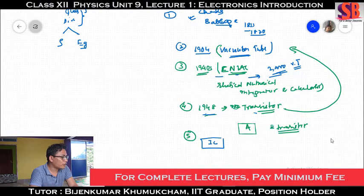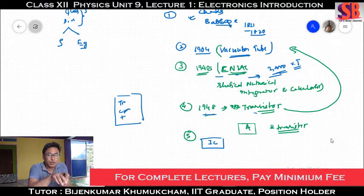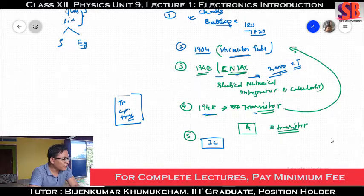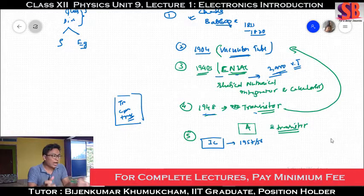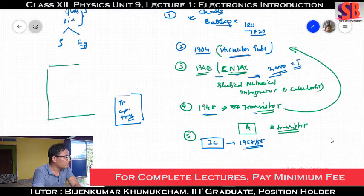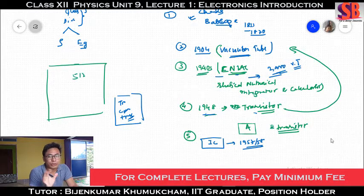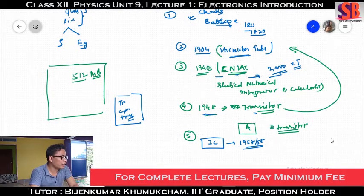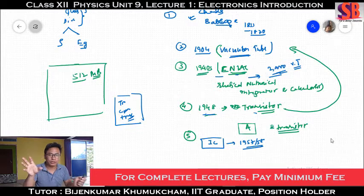The transistor, capacitor, transformer — the IC was invented in the 1950s and 1960s. If you look at it, in Google it is small. It is 512 MB. It has a hard drive. It is a memory card. It is a circuit. There are wires about the computer.